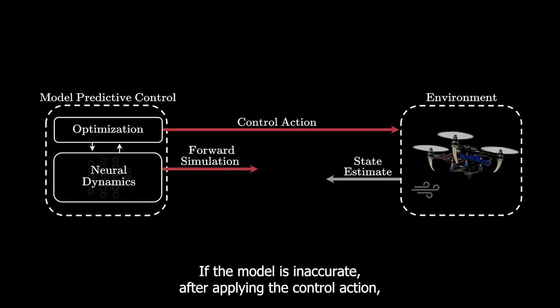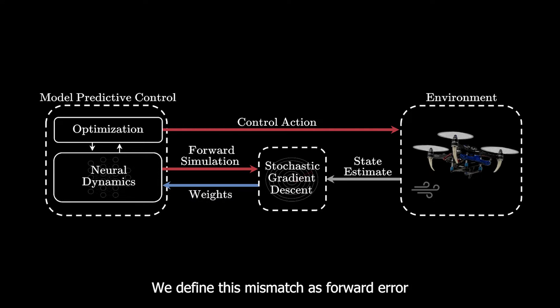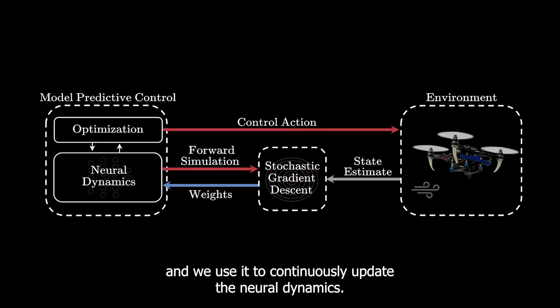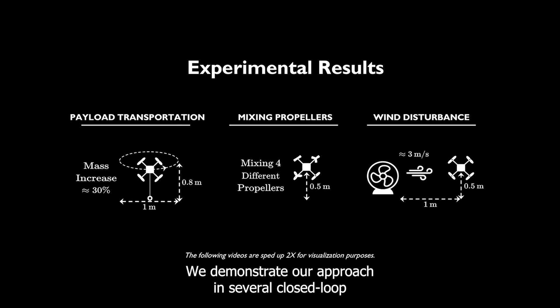If the model is inaccurate, after applying the control action, the system will reach a state different from the simulated state. We define this mismatch as forward error, and we use it to continuously update the neural dynamics.